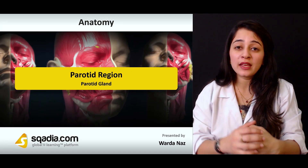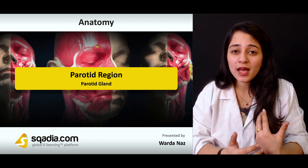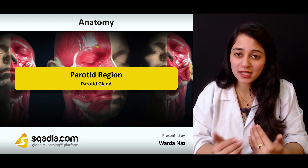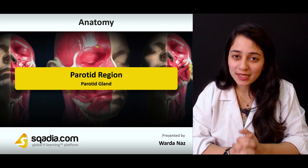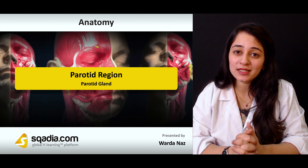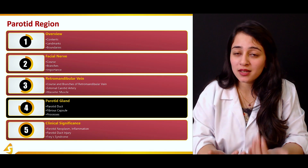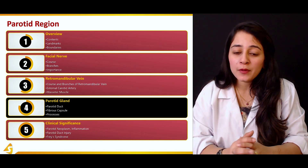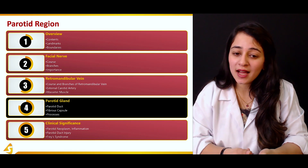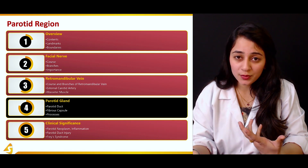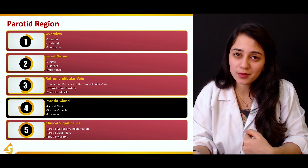The parotid glands are the major salivary glands in animals and in humans. We have two parotid glands present on either side of the face, in front of the ear. In this section we'll be covering in detail about the parotid gland — what it is, the parotid duct or Stensen's duct, the fibrous capsule covering this gland, the processes present, and the nerve supply.